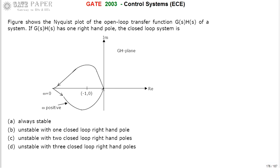Hello, we are discussing the GATE 2003 ECE paper. Look at the Nyquist plot given for the open loop transfer function G(S)H(S). If G(S)H(S) has one right hand pole, is the closed loop system stable or unstable? If it is unstable, how many poles are present on the right hand side? We will go for the right answer after discussing some concepts behind the Nyquist plot — after understanding that concept, it should take less than one minute to answer this question.